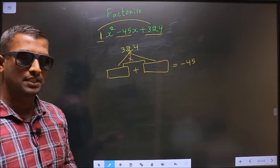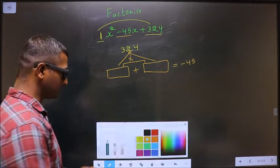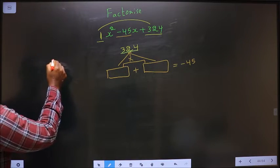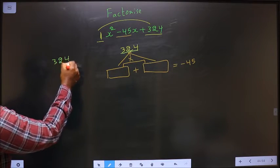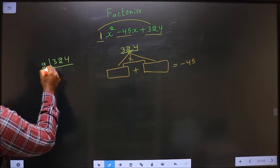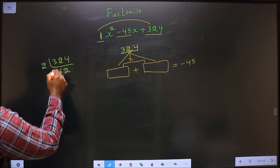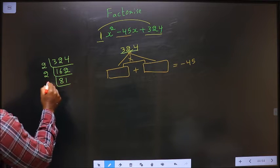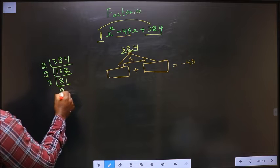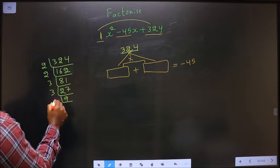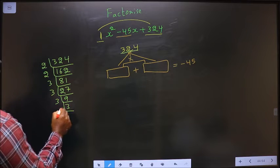Now to get those 2 numbers, we should take LCM of 324. Starting with 2: 2 ones, 2 sixes, 2 twos. Again 2: 2 eights, 2 ones. Now 3: 3 twos, 3 sevens, 3, 9, 3 threes, 3 and 1.